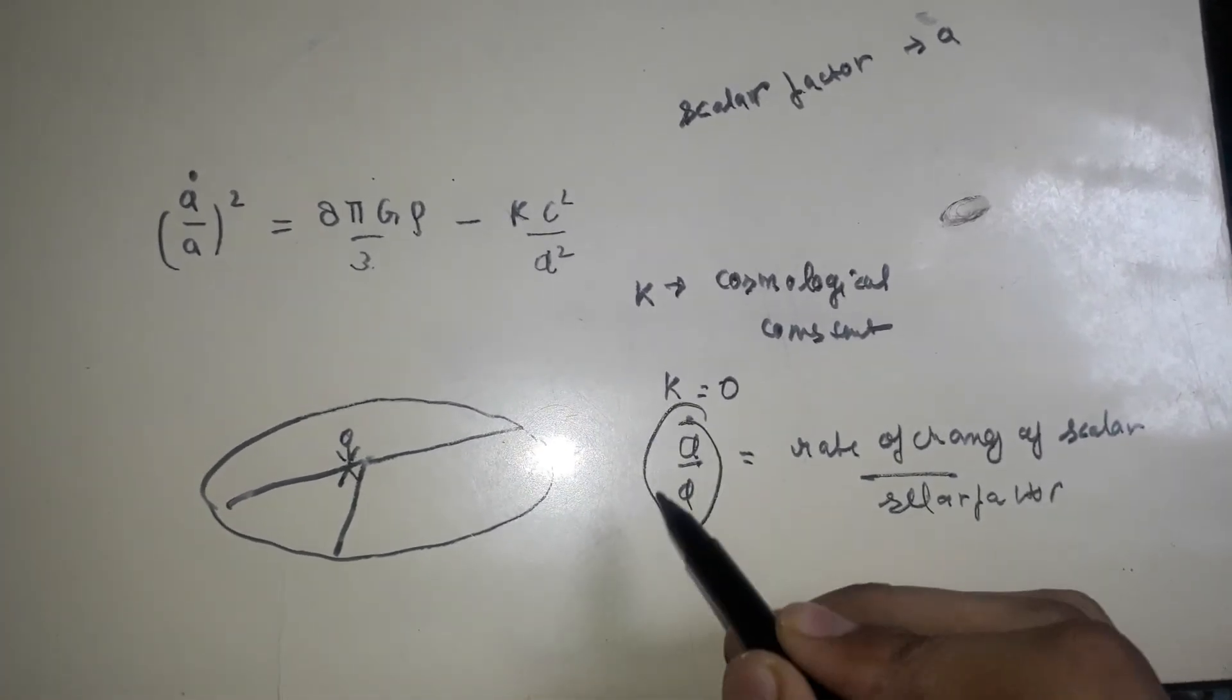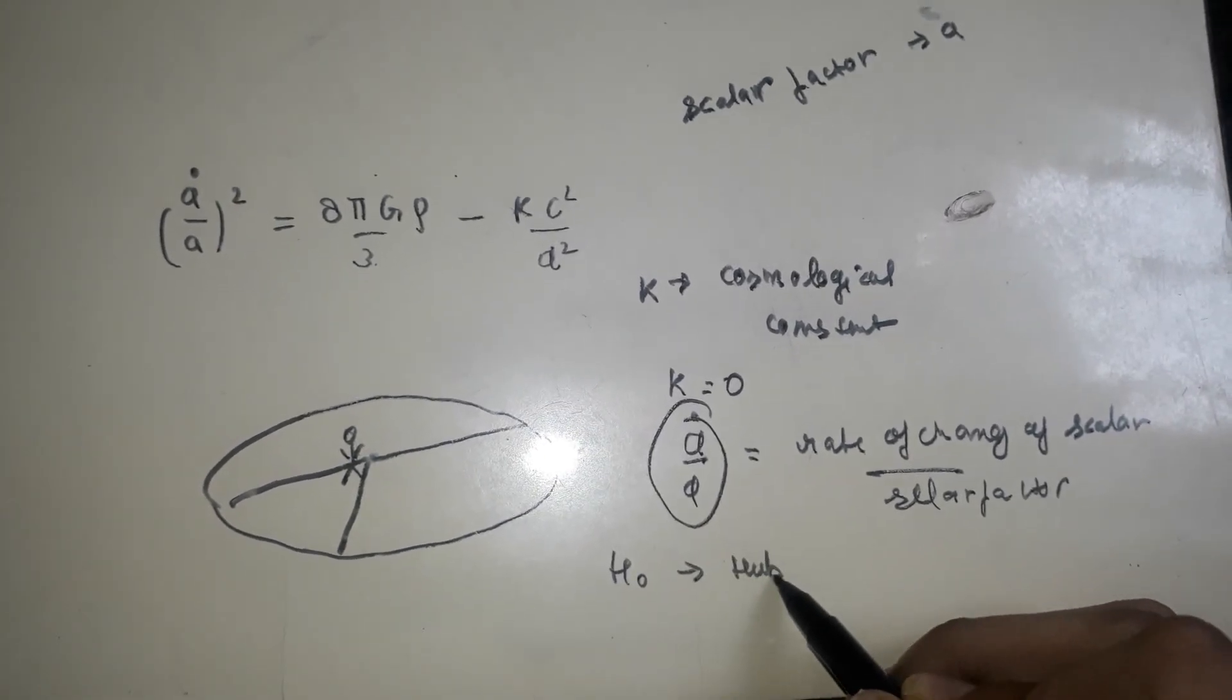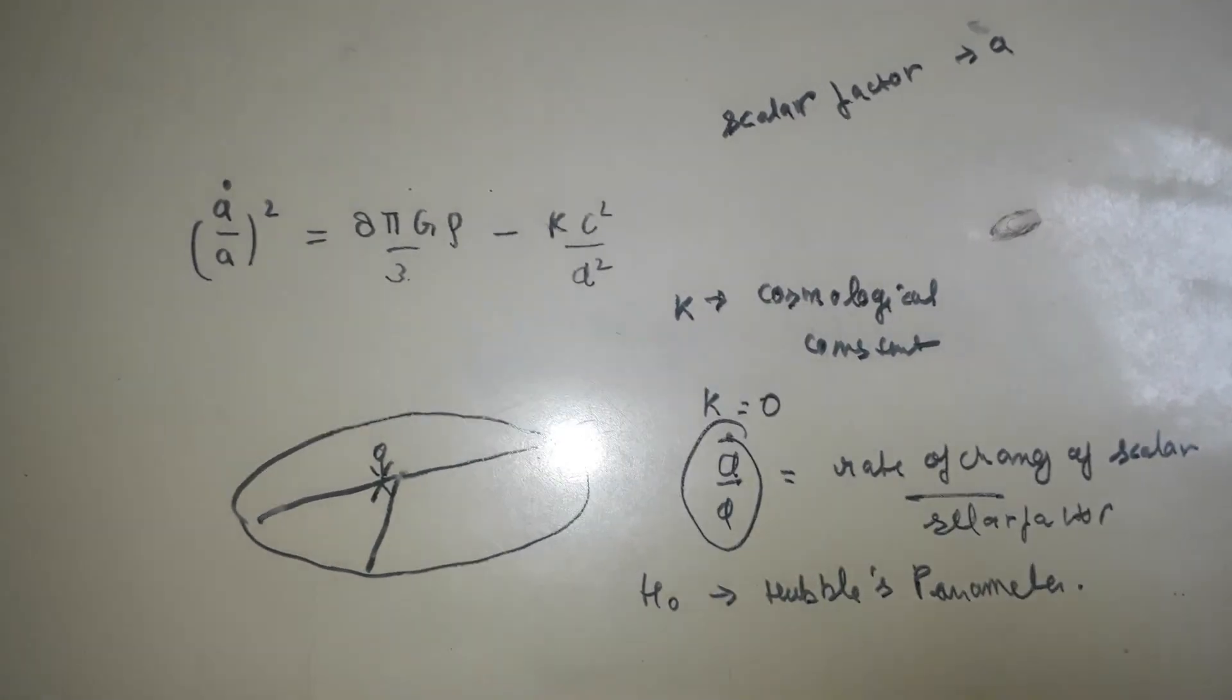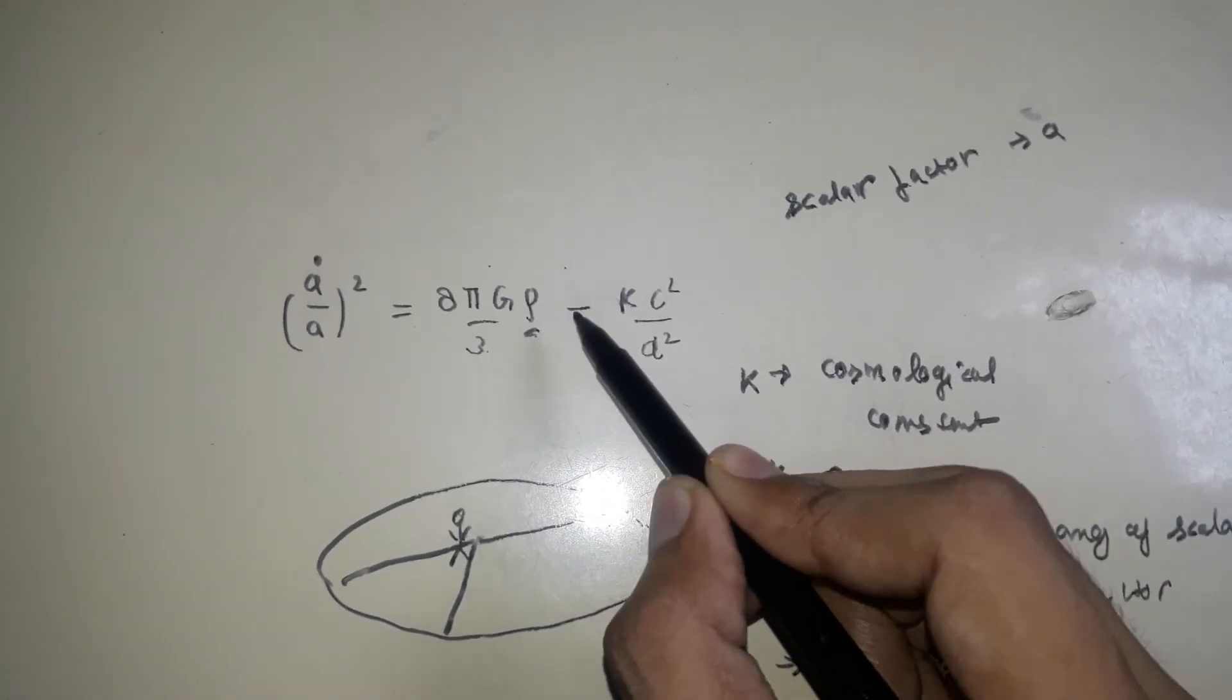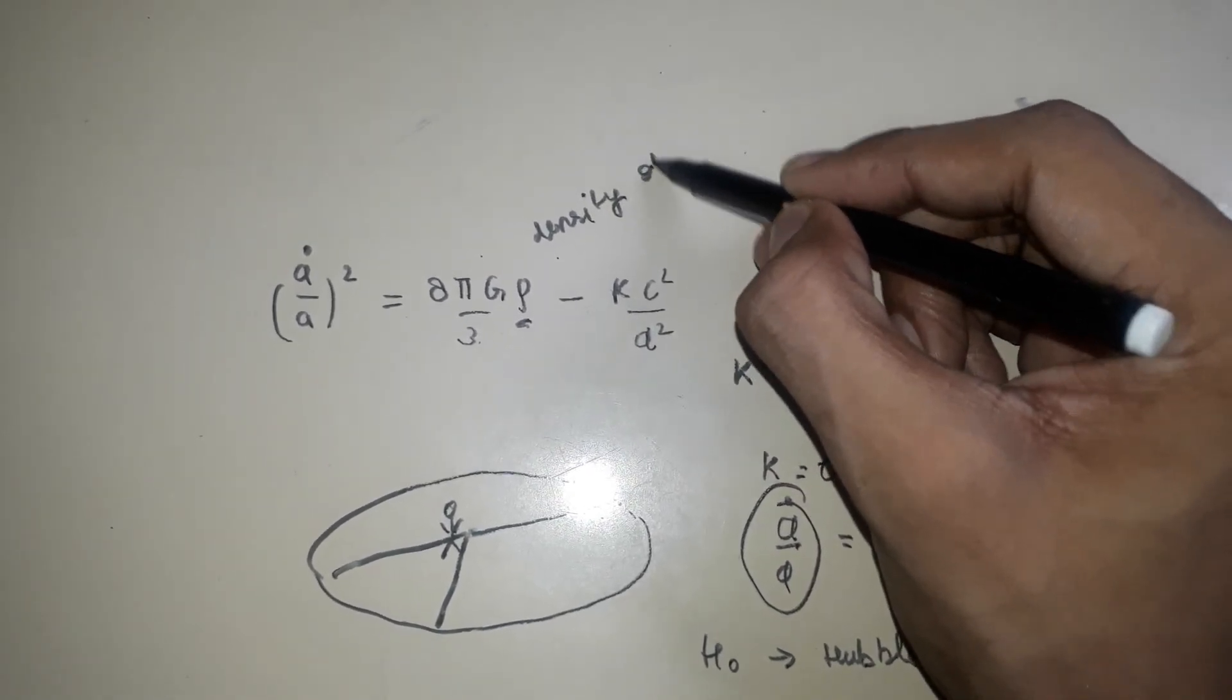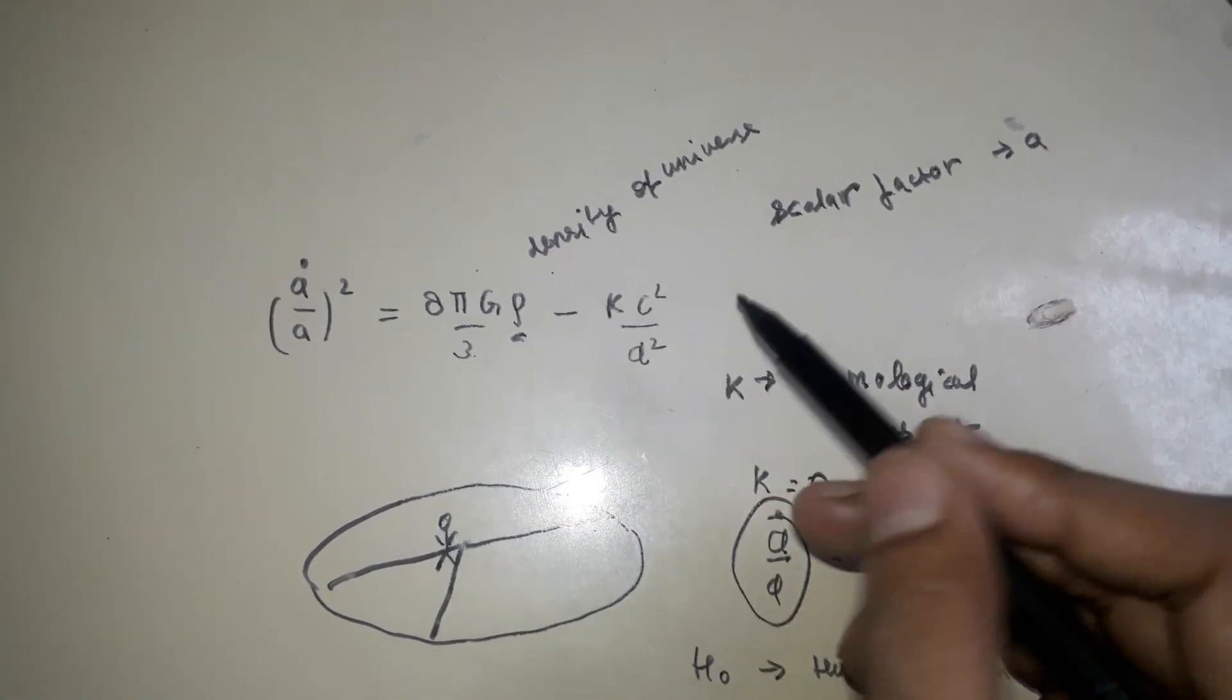And also we call this stuff as H naught, which is Hubble's parameter. So what else is in the equation? This rho, this rho is actually density, density of universe.